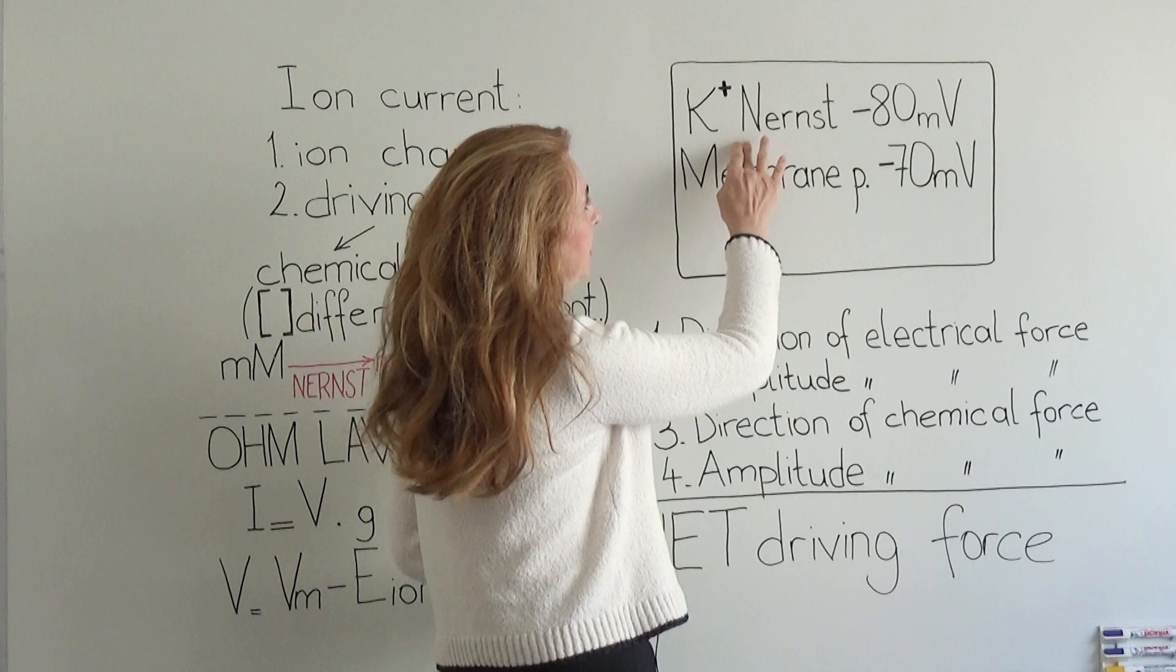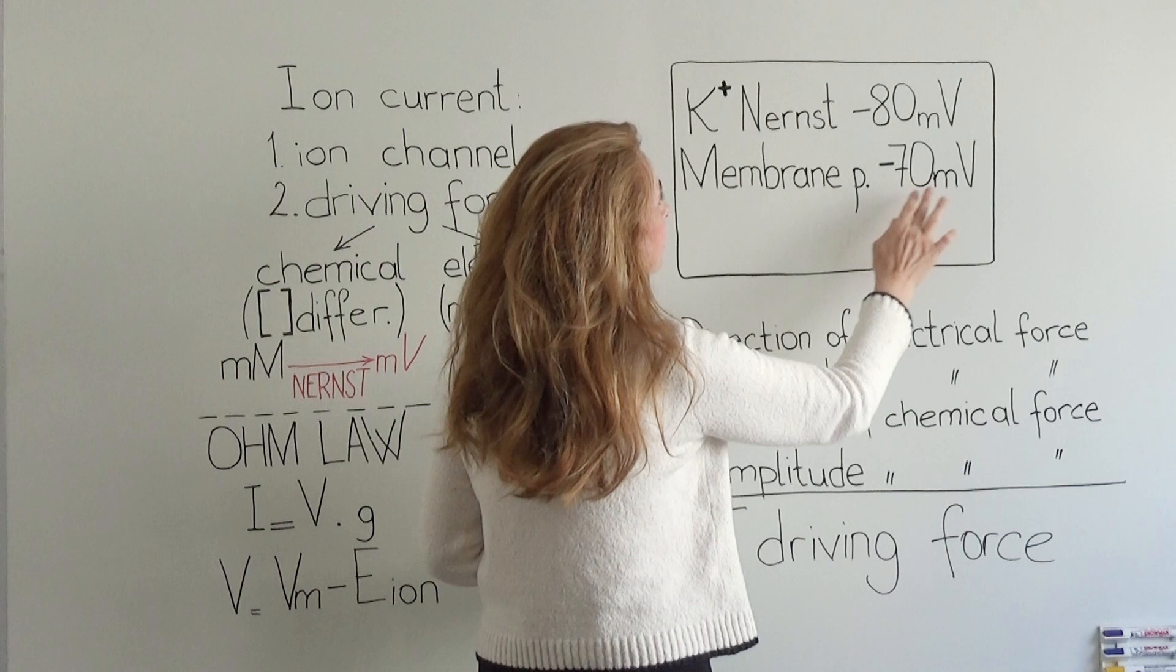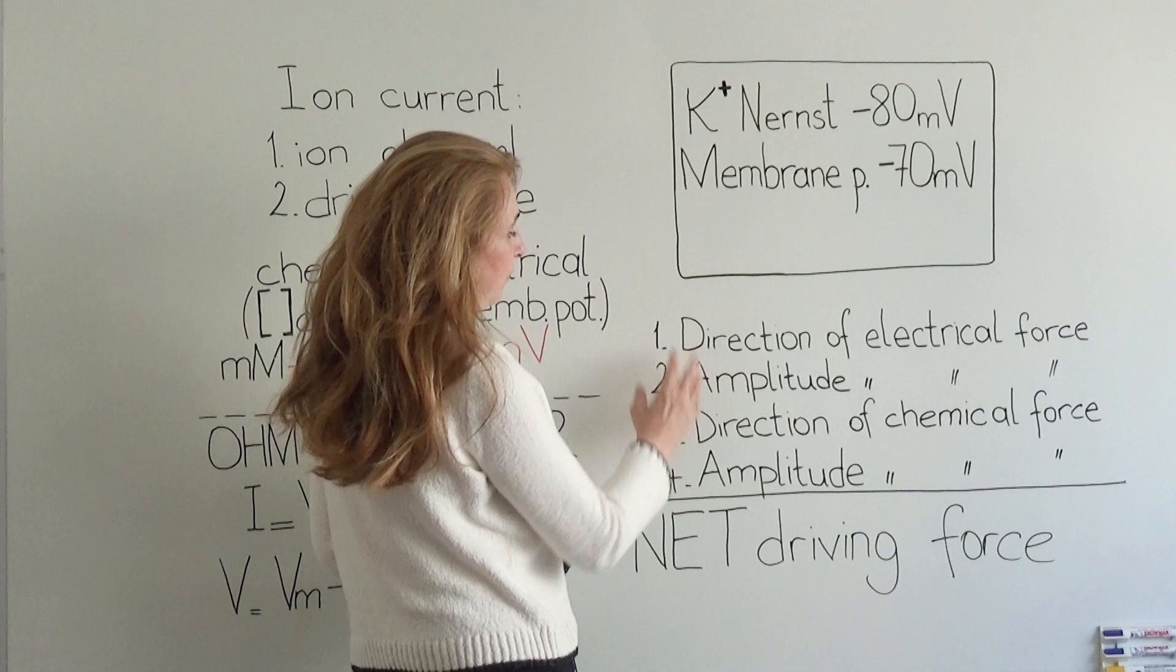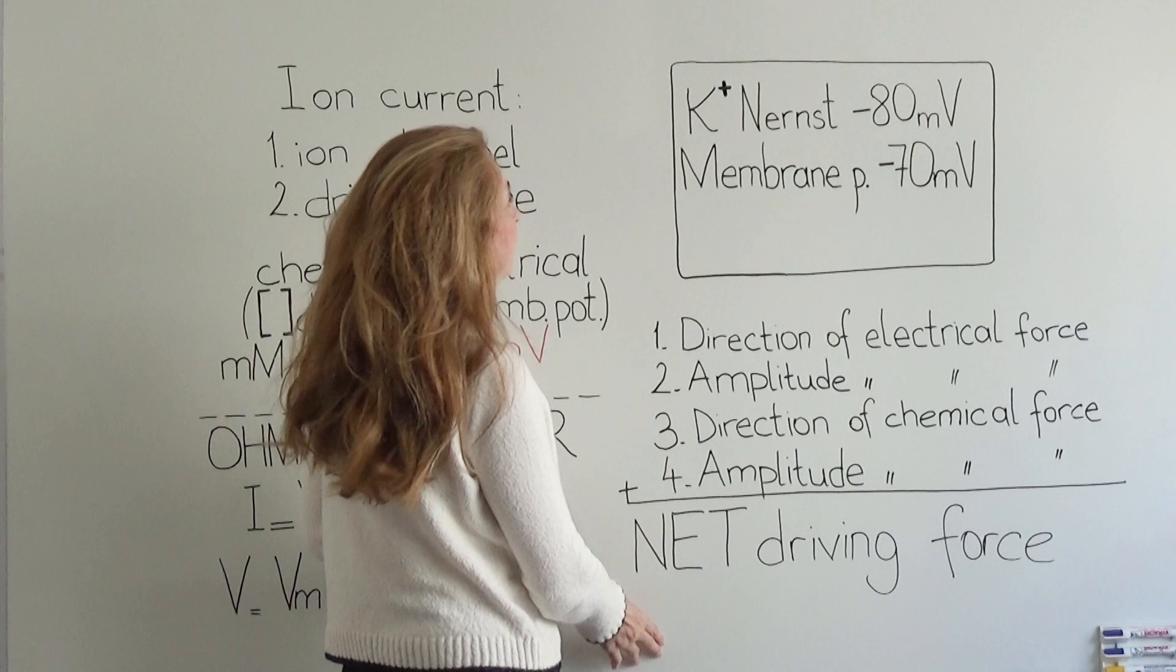In our example, the Nernst potential for potassium is minus 80 millivolts and the membrane potential at that moment is minus 70 millivolts. I make use of four steps in finding out the net driving force or the electrochemical force.